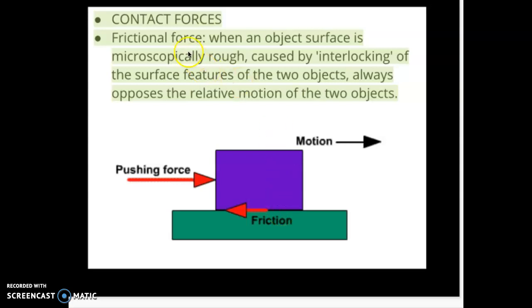So frictional forces are caused by the interlocking of surface features of two objects. And what's important about this frictional force is that it's always opposite to the way that two objects are moving or would like to move.